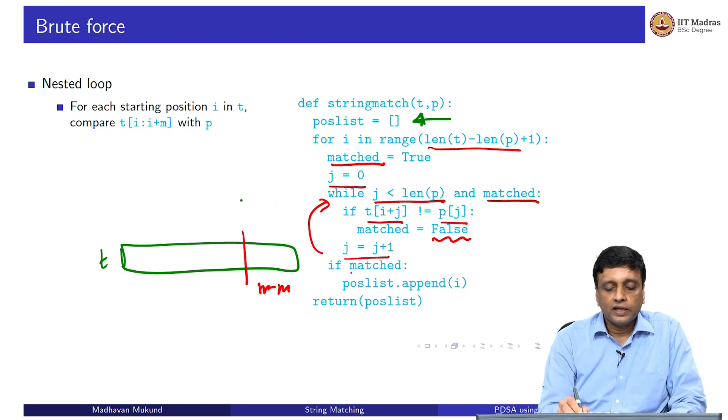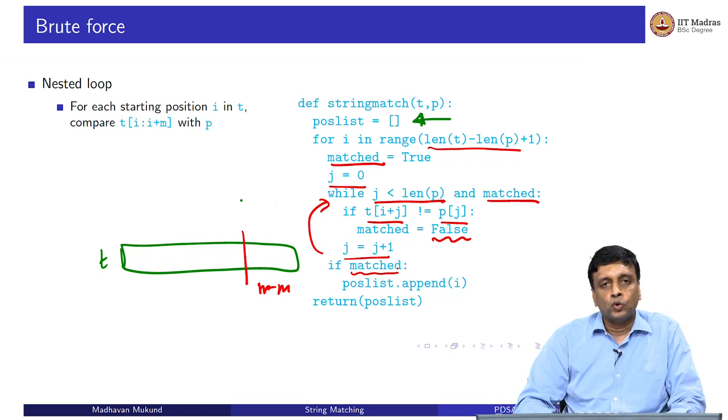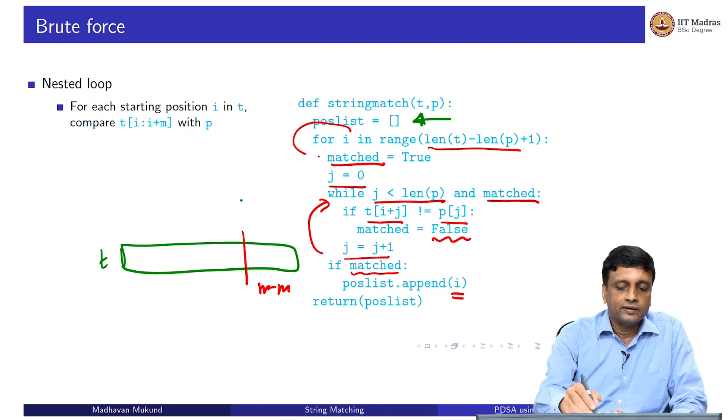When I come out of the loop, if I still have matched set to true, it must be that I reached the end of the pattern without finding a mismatch. I can append the current starting position, which I started with right now, to my list of matched positions. And if matched is false, then I found a mismatch. This i can be skipped and I can go to the next i, which is happening here in this for loop.